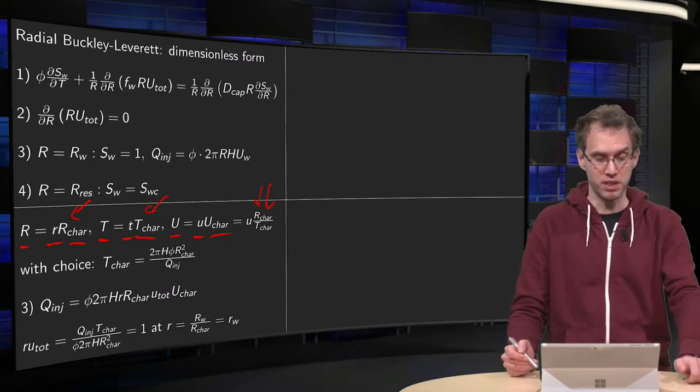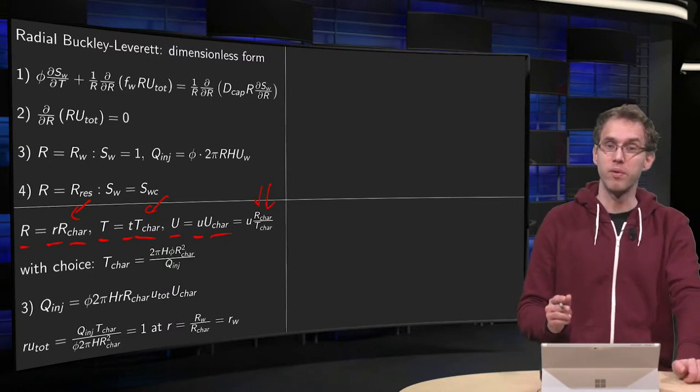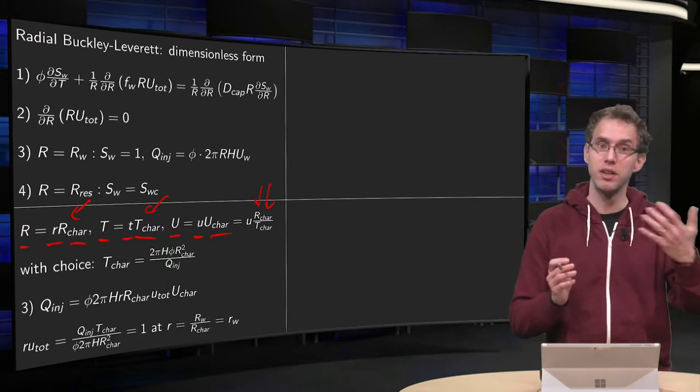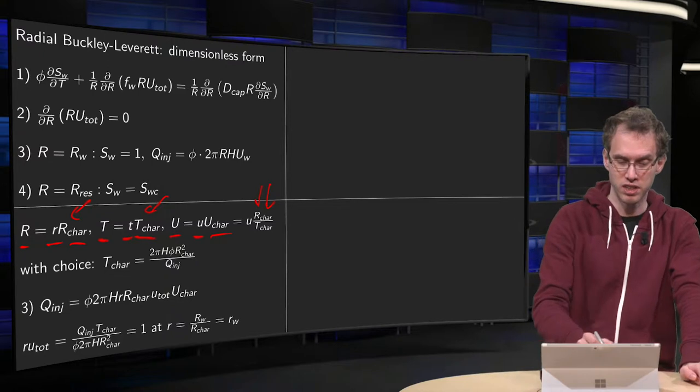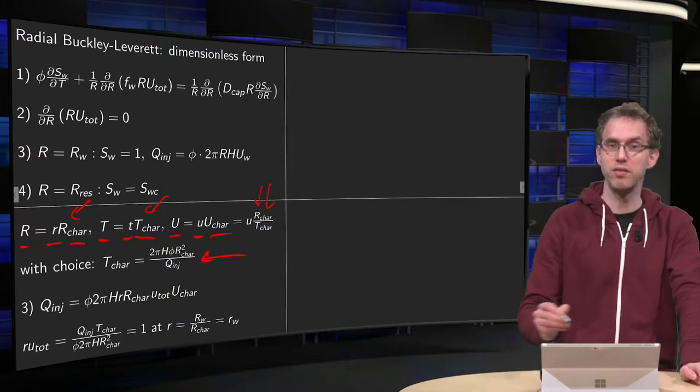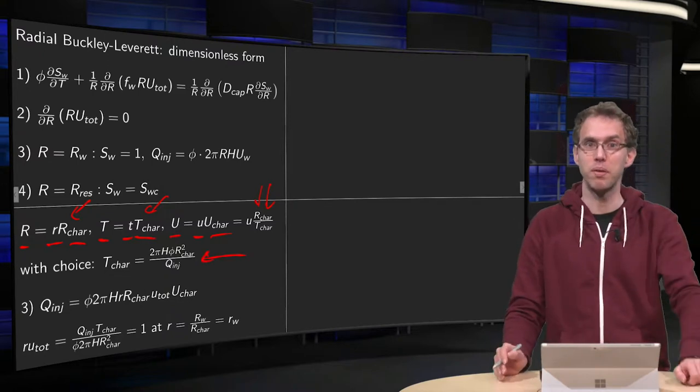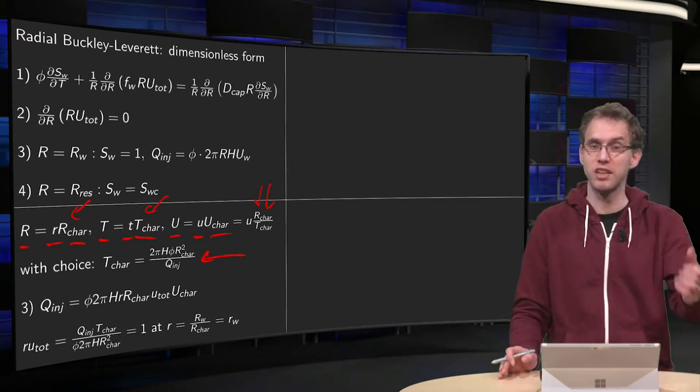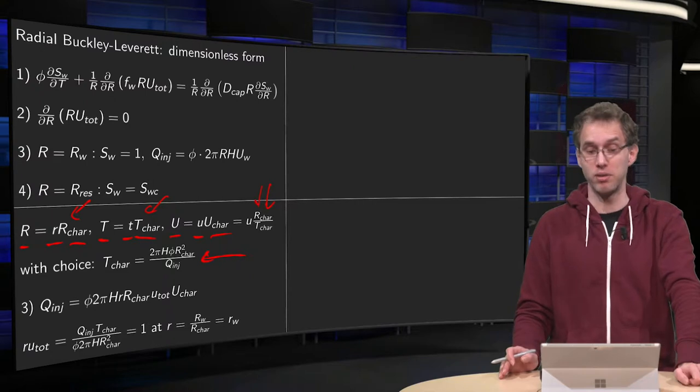With a particular choice. Here, we leave R-characteristic free and then we choose T-characteristic in this way, as you saw in the previous video. Because we use our boundary condition to find T-characteristic. We use this T-characteristic to simplify our boundary condition.